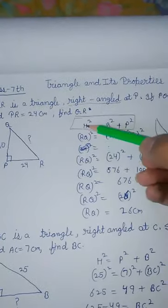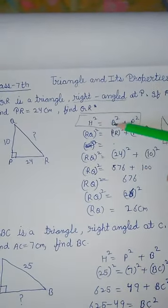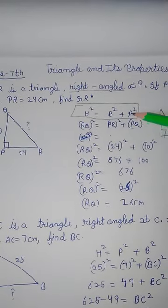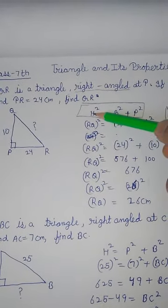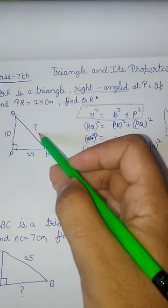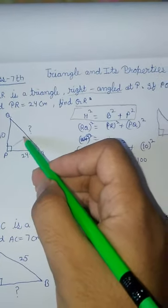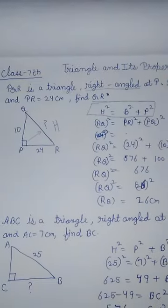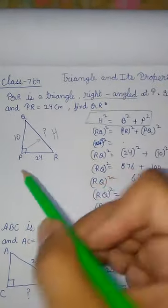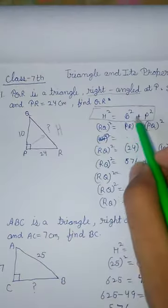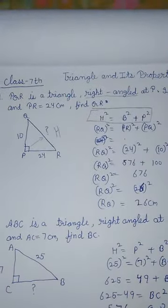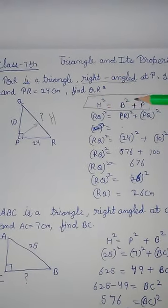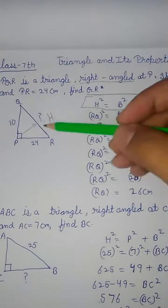H square, this is hypotenuse. B means base, P means perpendicular. Now this is H, the side opposite to the 90 degree angle. H means hypotenuse (short form abbreviation), B is base which is below, and P is perpendicular. I hope you understand what is hypotenuse, what is base, what is perpendicular in the three sides of the right angle triangle.